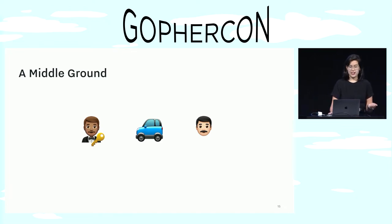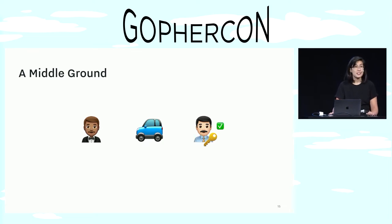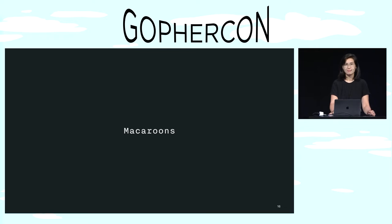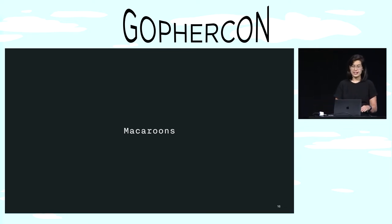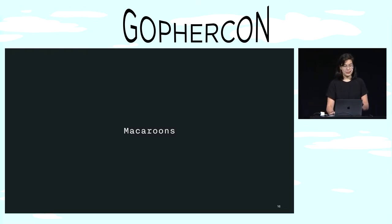So this would be like if our emoji friend could hand the valet a key that wouldn't work generally, but would work within a one-mile radius, or if the driver was wearing the valet company uniform, or some other set of caveats based on context. And this is how macaroons behave. They're bearer tokens, but they're contextually attenuated so their power is limited. And they're designed in this pragmatic way because as far as users are concerned, they should behave just like cookies.